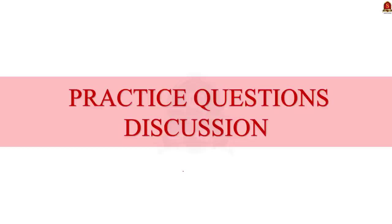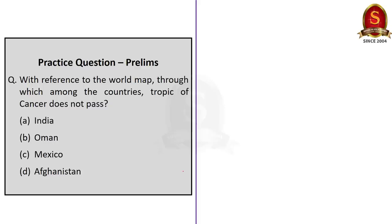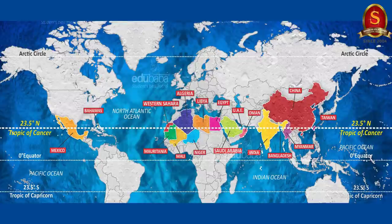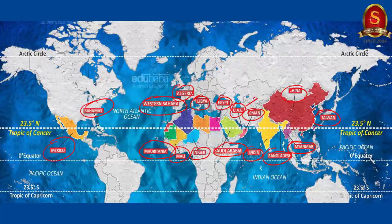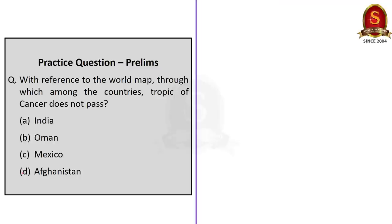Now let us take up the five practice prelims questions. First question: With reference to the world map, through which among the countries does the Tropic of Cancer not pass? Look at this map showing all the countries through which the Tropic of Cancer passes — Mexico, Bahamas, Mauritania, Western Sahara, Mali, Algeria, Libya, Egypt, Saudi Arabia, United Arab Emirates, Oman, India, Bangladesh, Myanmar, China and Taiwan. From this map we can know that the Tropic of Cancer does not pass through Afghanistan. The correct answer is option D, Afghanistan.